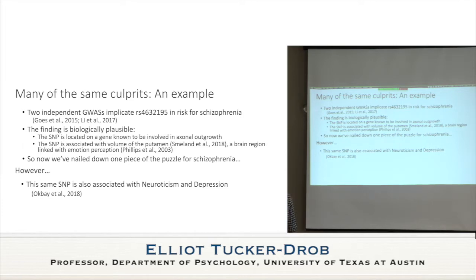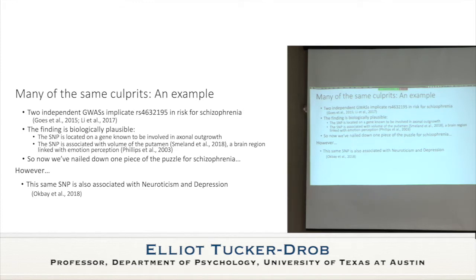It was associated in imaging genetics studies with the volume of the putamen — a brain region linked with emotion perception, which is often impaired in schizophrenia. But then this variant was also found to be associated with neuroticism and depression, which confused things because there was a draw to interpret the discovery specifically to the trait it was discovered on, yet it became relevant for a broader range of traits. We could cross-tabulate genome-wide significant discoveries, but that only tells you about the hits that overlap, which are probably the largest-effect variants.